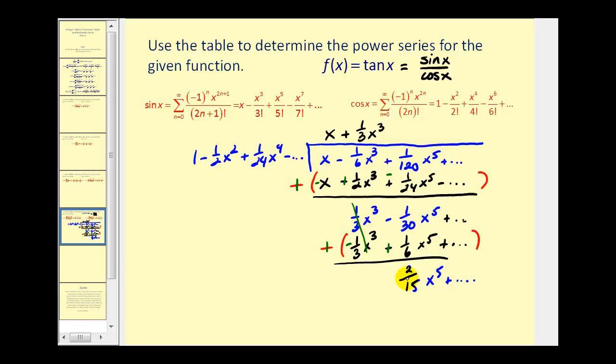Let's go ahead and find the next term. What times one will give us two fifteenths x to the fifth. Of course that's two fifteenths x to the fifth. We multiply by one. And we continue this process.